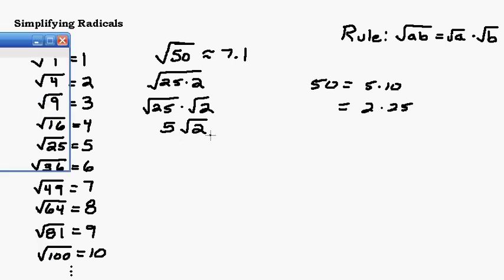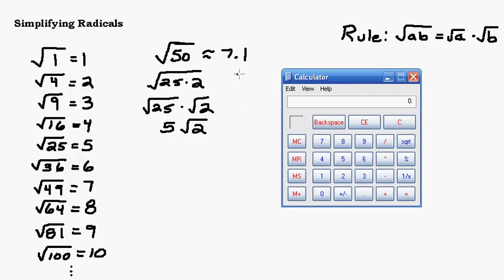Let's look at the calculator. If we do 5 times the square root of 2, it should come out to be the same. We're not changing the value, we're just changing how it's expressed. Square root of 2 times 5 equals, we still get 7.07. Same thing we would get if we did 50 square root. You could check your answer. If the decimals are not the same, you've messed up somewhere because it has to have the same value. We're not changing the value, we're just changing how it looks.